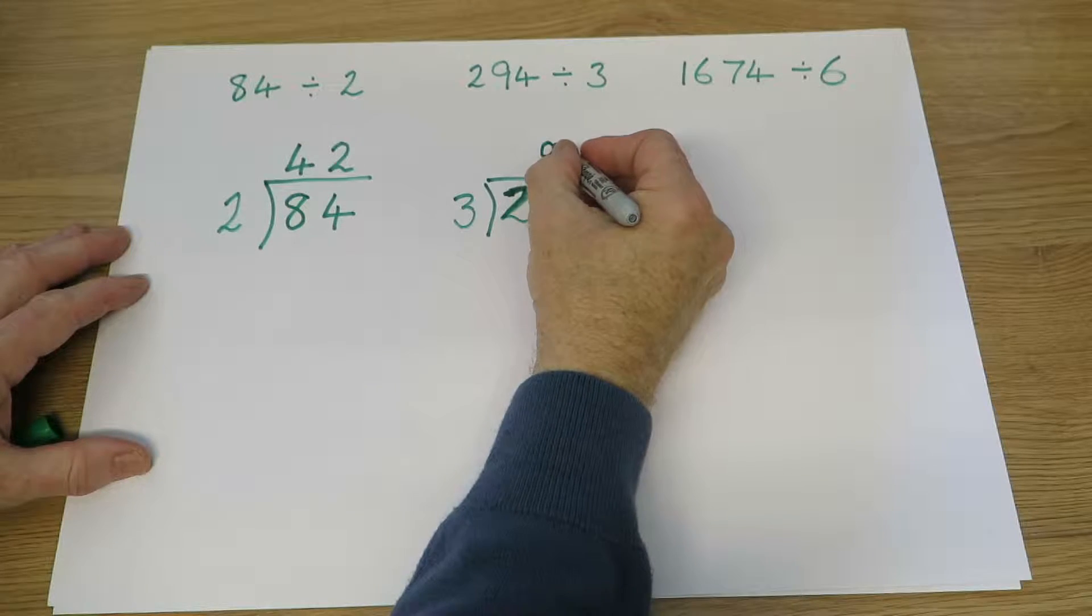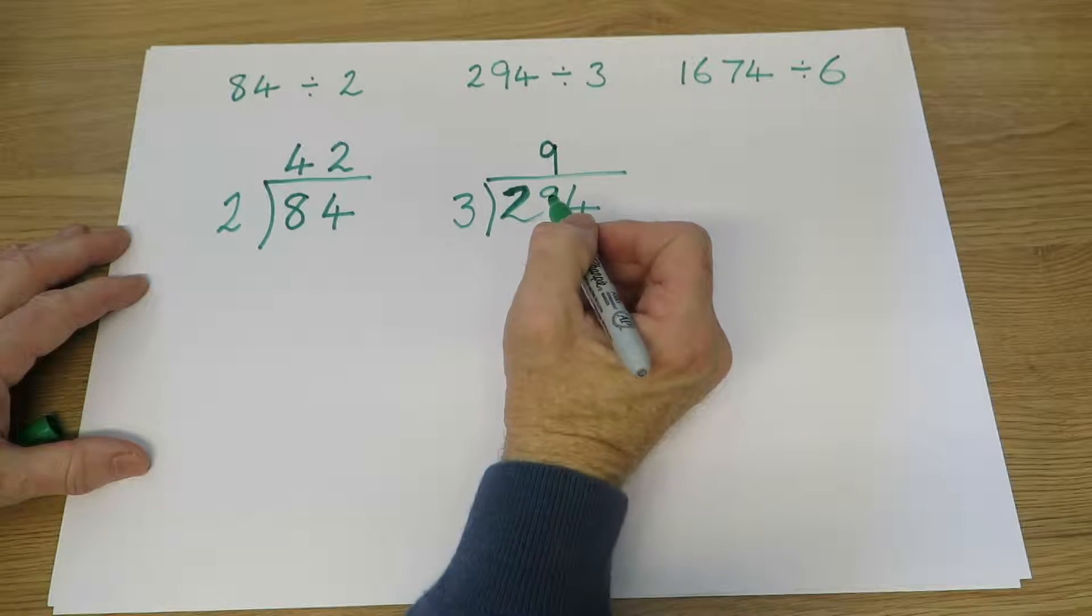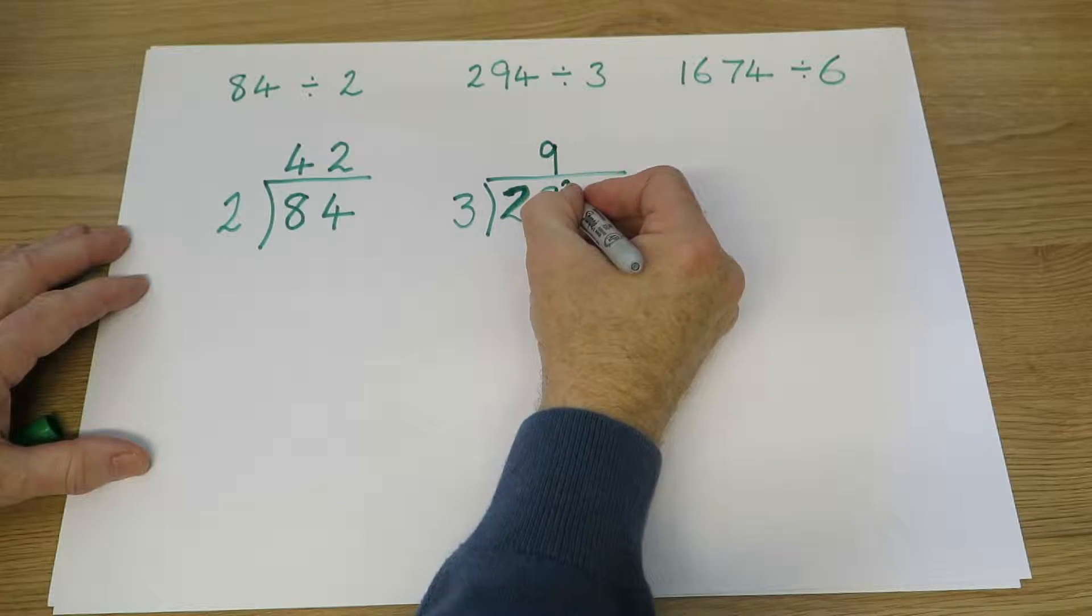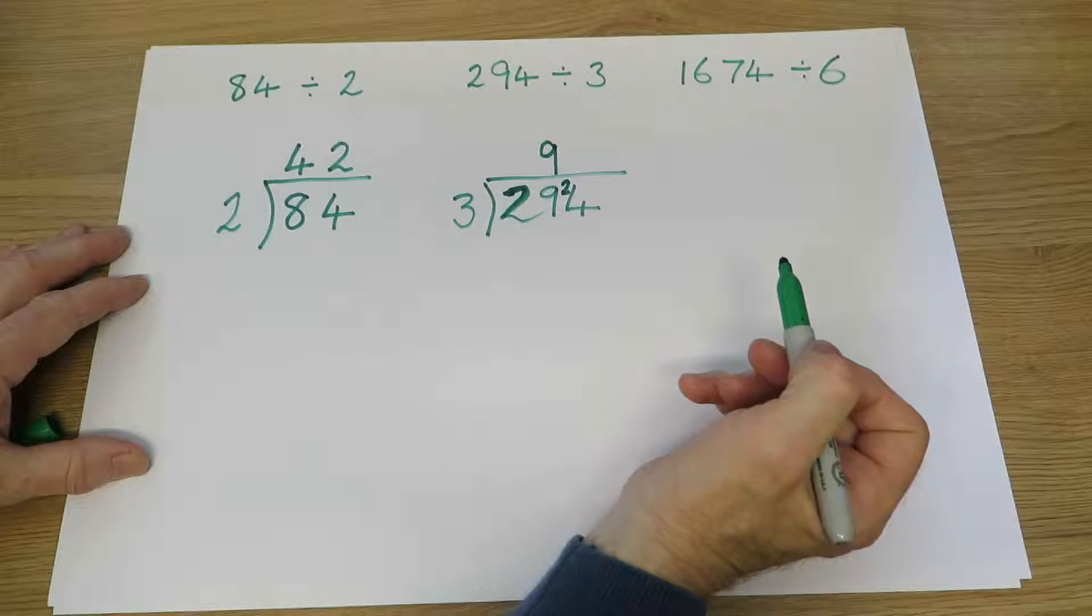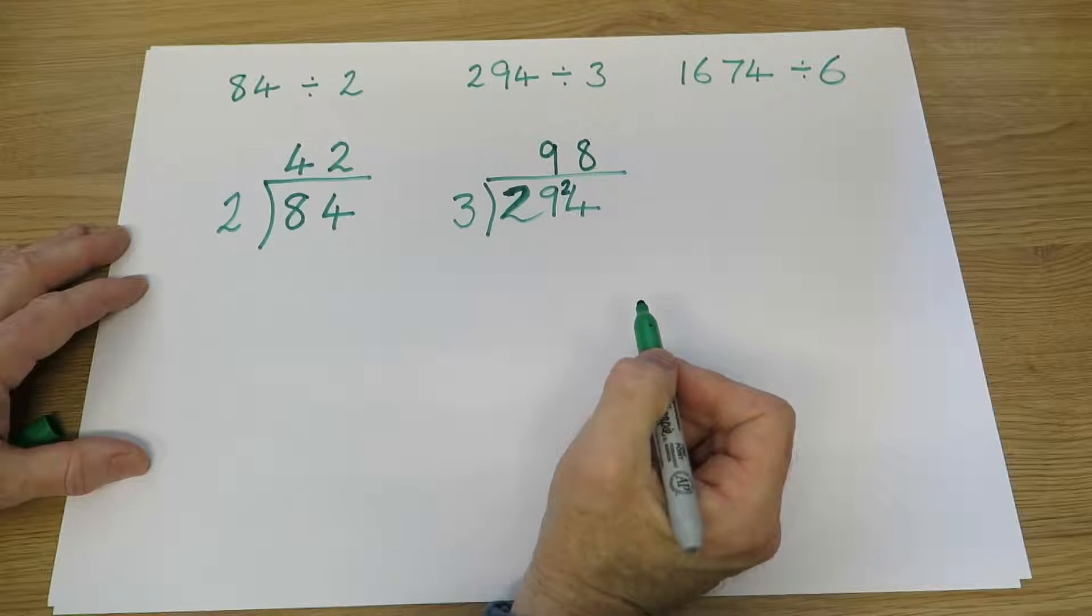9 threes are 27, which is the closest one below 29. 9 threes are 27, so there's 2 left over, which comes with us next to the 4. How many threes in 24? There are 8. So the answer is 98.